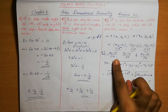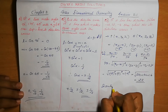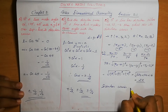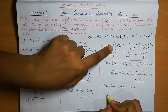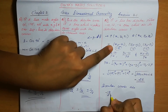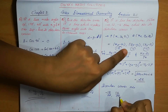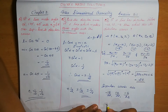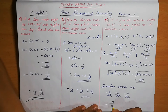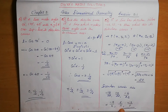So we can substitute and find the direction cosines. Direction cosines are minus 18 by 22, 12 by 22, and minus 4 by 22. Simplifying, this equals minus 9 by 11, 6 by 11, and minus 2 by 11. These are the direction cosines of the line.